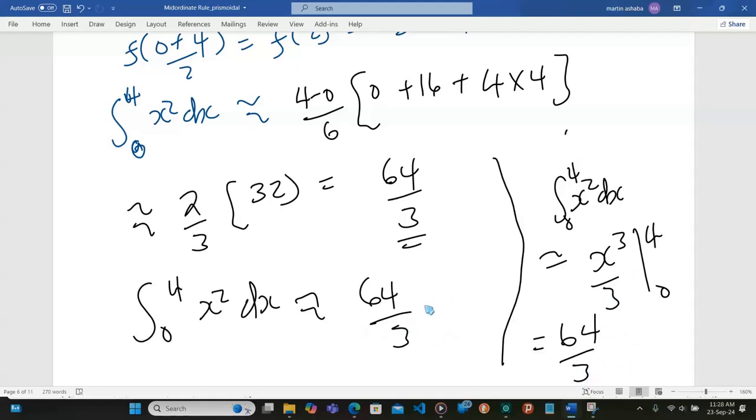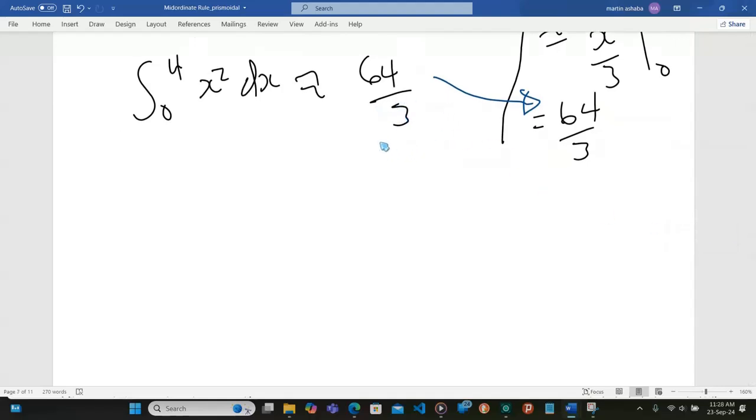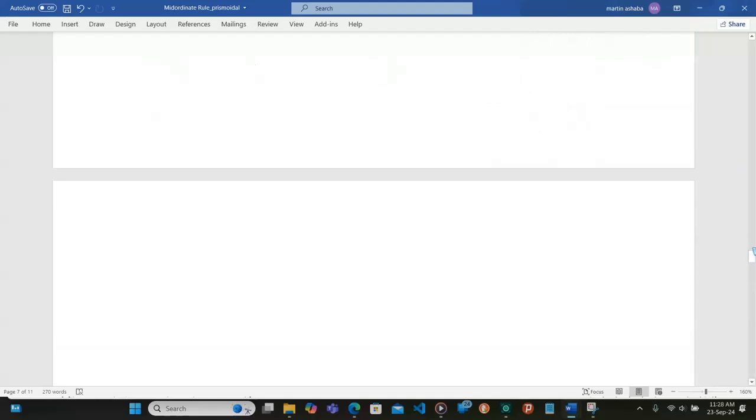So you can see these two are the same, and therefore we can say our prismoidal formula is actually giving us a more exact or approximate exact answer. Because in other times, if we are required to give this answer to a number of decimal places, then it's going to be an approximated value.